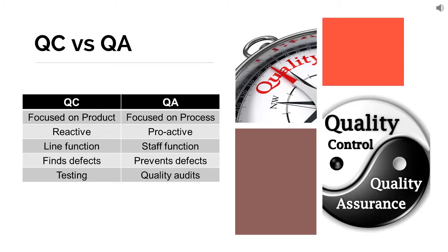In all that chain, the focus was on the product. Whereas when it comes to quality assurance, the focus is on process. Here the intent is that if the processes are being done in the right way, the product will be right. In QA, the focus is on process.